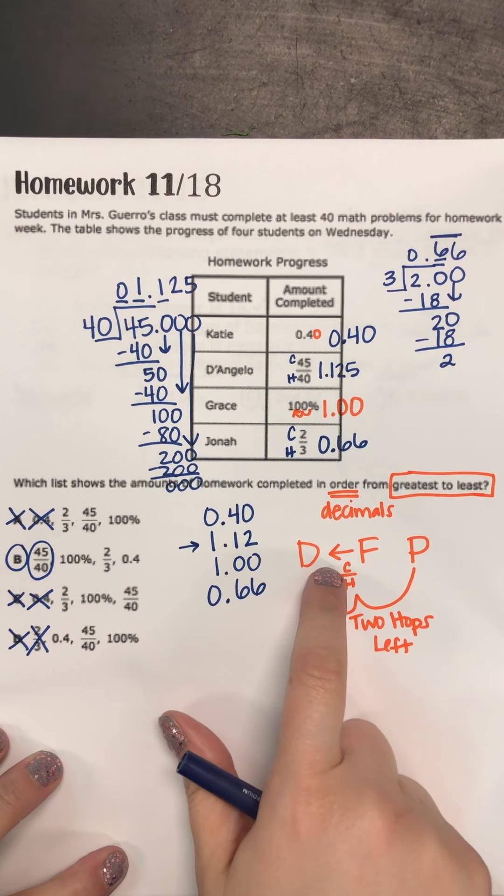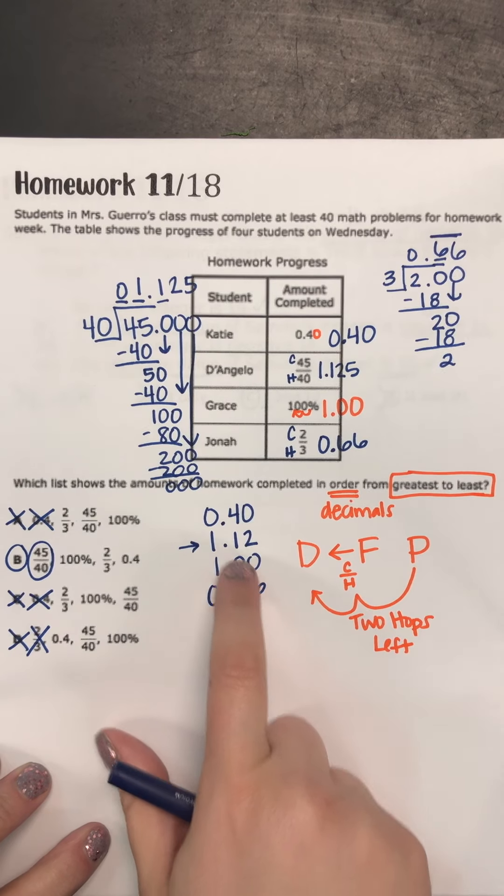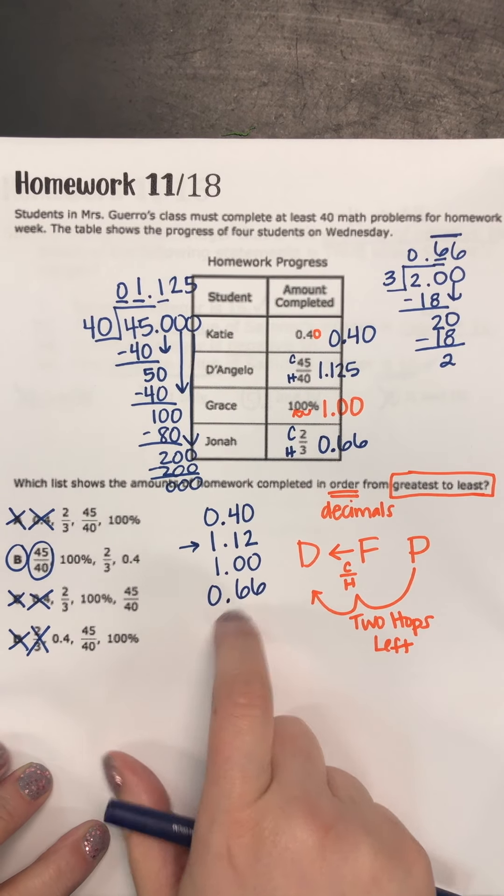Remember, turn everything into a decimal. Two hops to the left or cowboy and horse. Always make it look like money, so at least two decimal places.